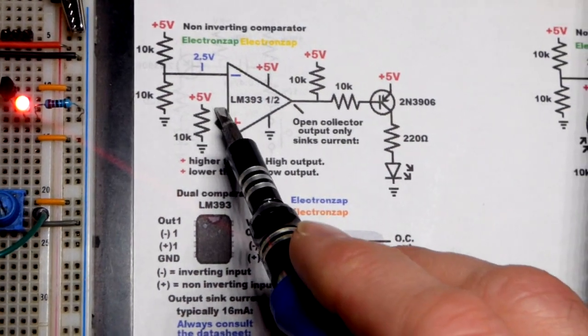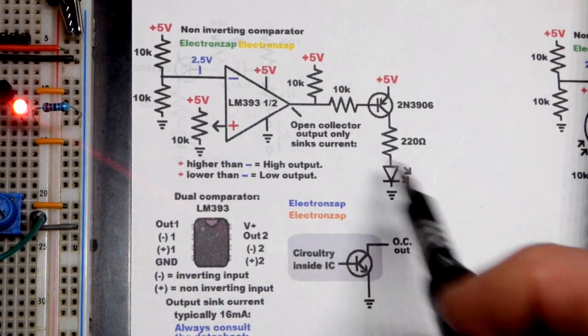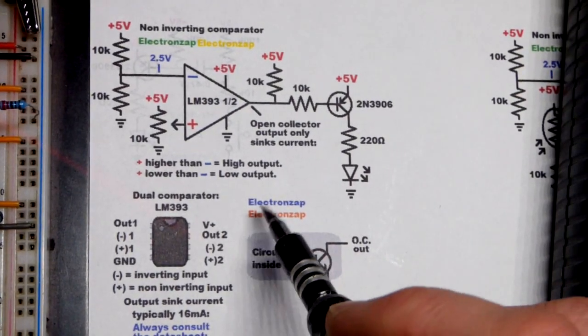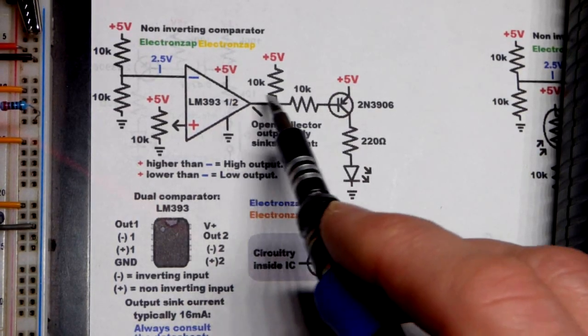So when we are higher than 2.5 volts, we have a high output. We need a pull-up resistor to actually get that voltage because this is an open collector output when you're working with the 393. And so lower than 2.5 volts, we will get a low output.